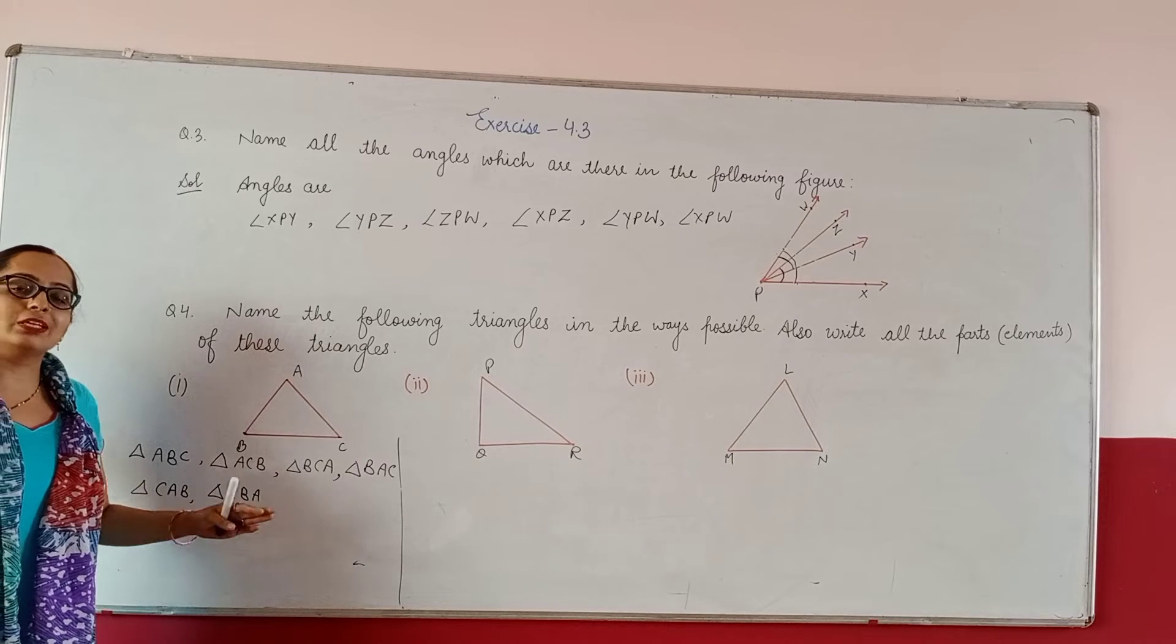Now similarly this one. Now this one, triangle LMN, triangle LNM. Now next one, triangle MNL, triangle MLN. From M you keep L, N or N, L. Okay? Now triangle from N - triangle NML, or triangle NLM. These are the triangles.